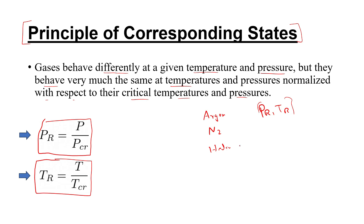The actual pressure and temperature are different for each gas. But the normalized — reduced — pressure and temperature are the same. This is the same.